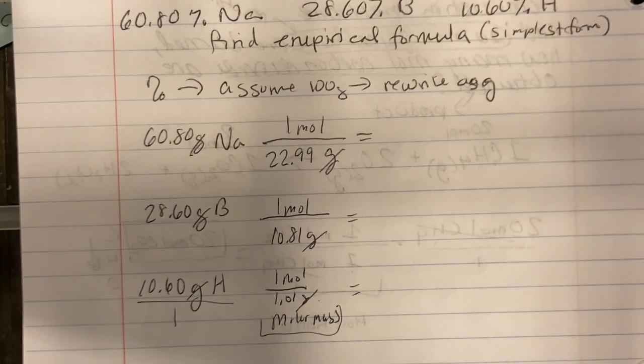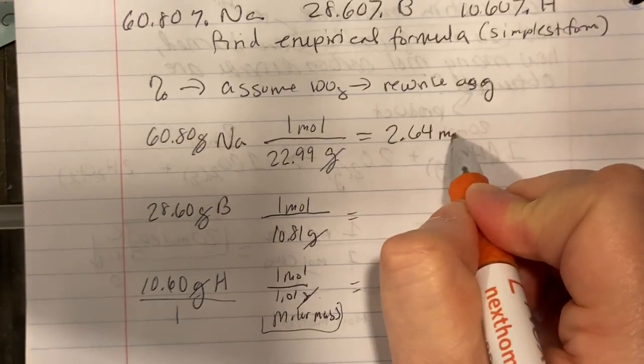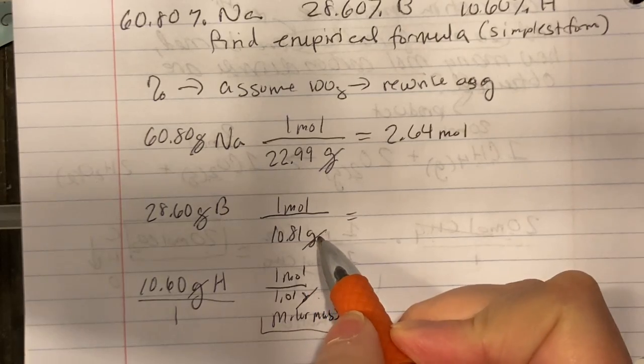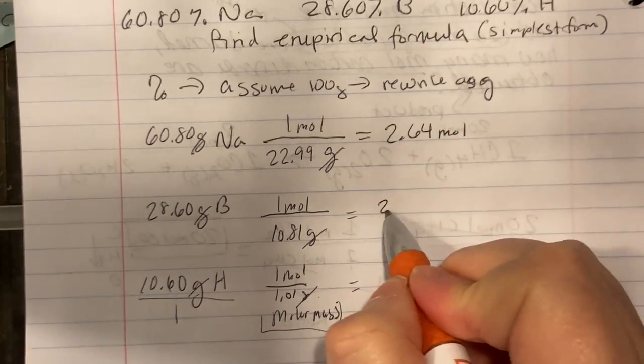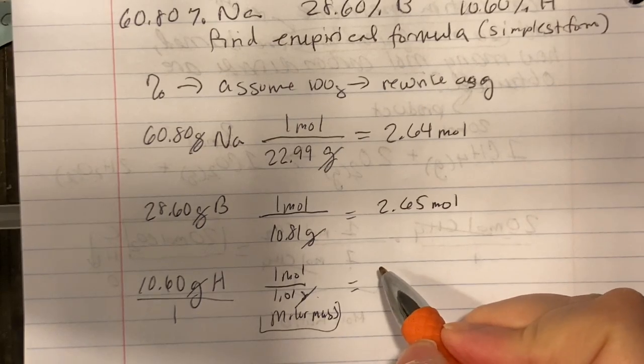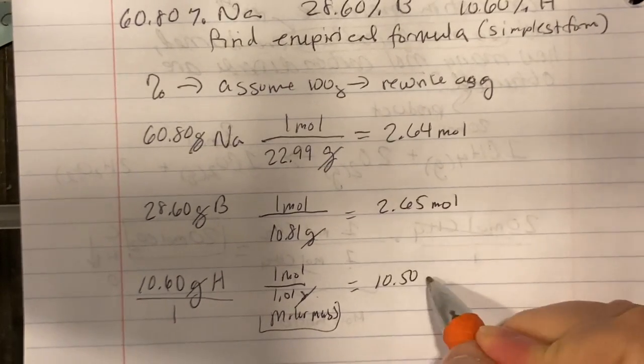60.80 divided by 22.99, 2.64 moles. 28.60 divided by 10.81, 2.65 moles. 10.60 divided by 1.01, 10.50 moles.